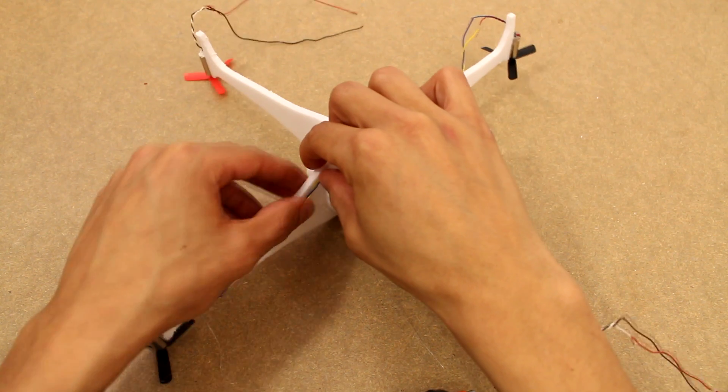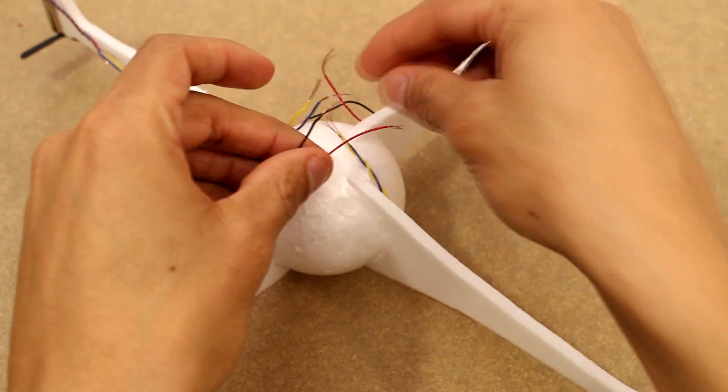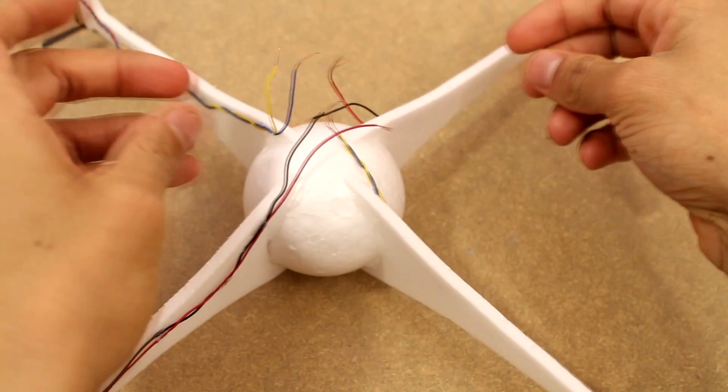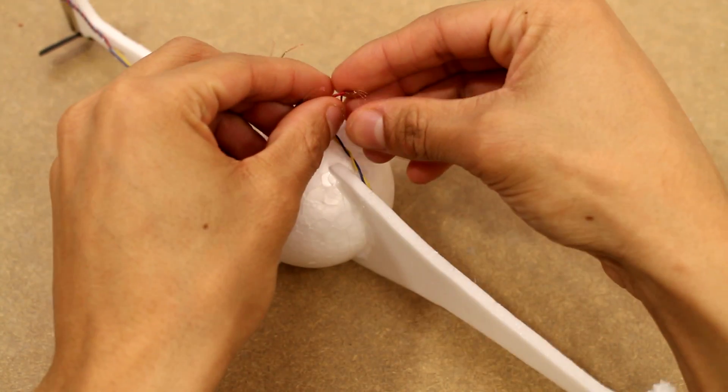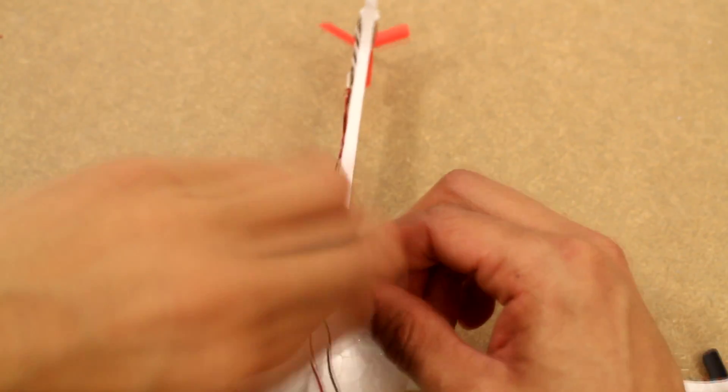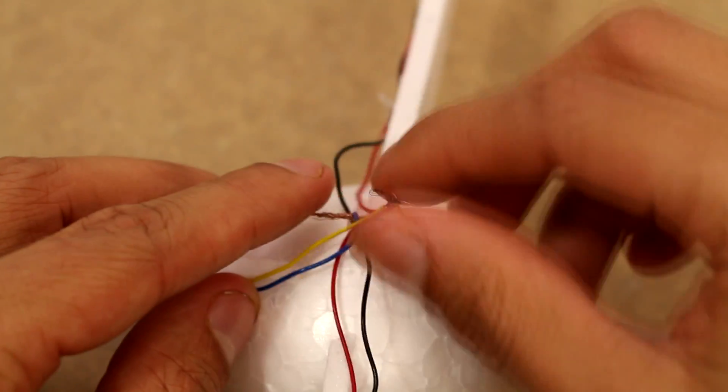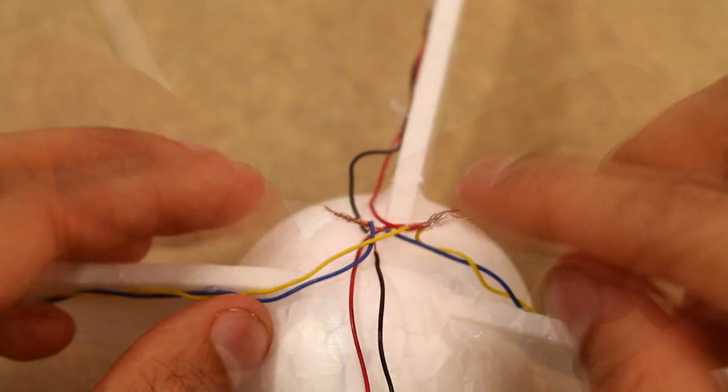So now it's time to wire it up. At first I attached all the positives to the positives and all the negatives to the negatives, but I found that didn't work very well. It didn't give me much control, so in the end I changed it up, and each set of two motors has its own two wires so we can control each separately.